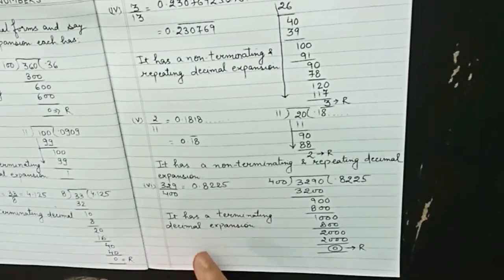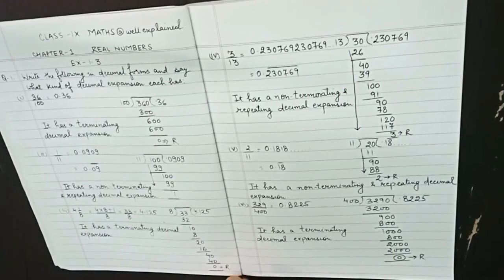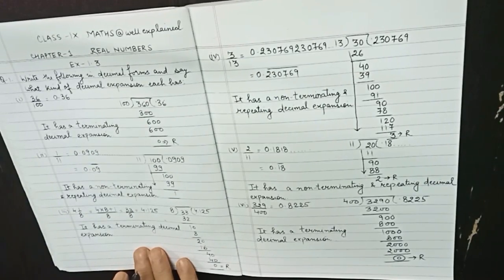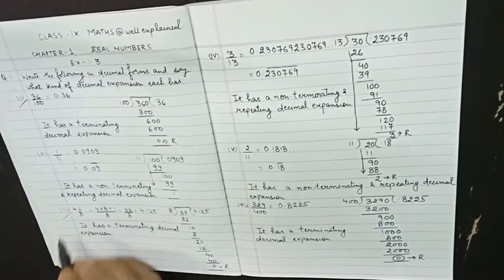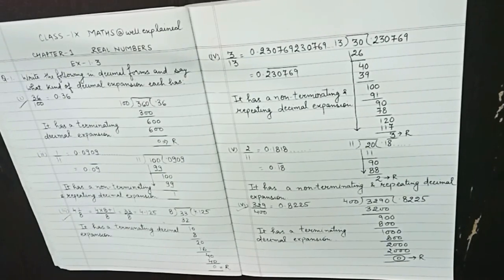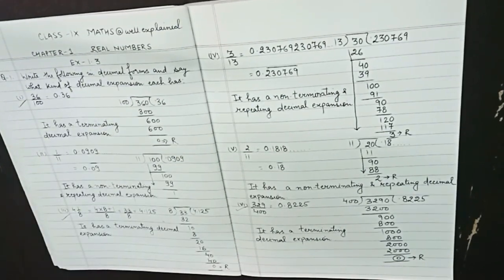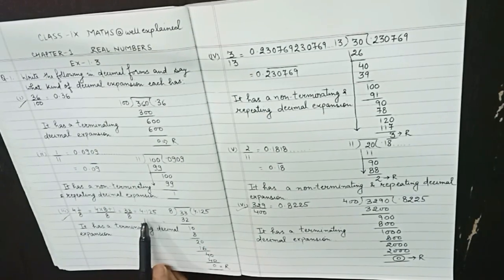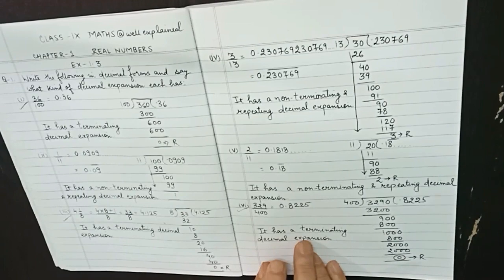You have to show the divisions as well as tell the kind of decimal expansion. In all these examples, rational numbers are expressed in decimal form. The division comes to an end without leaving any remainder in the first, third, and sixth examples. Such decimals are called terminating decimals. Since the number of digits after the decimal is finite — two, three, and four digits respectively — these are also called finite decimal forms.